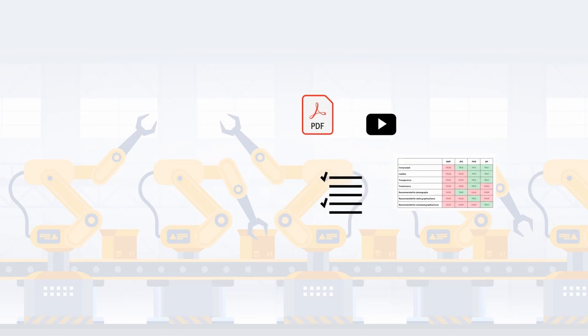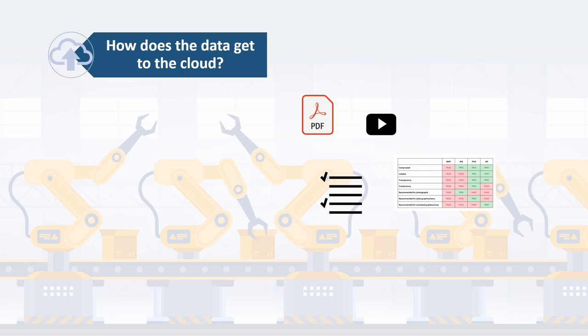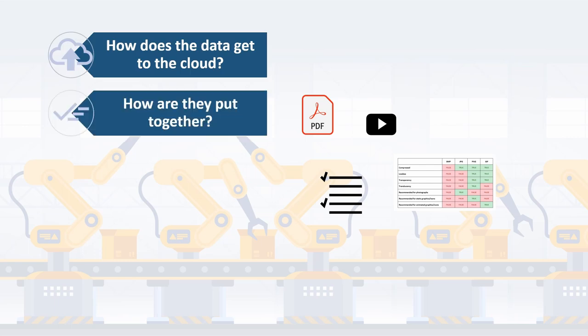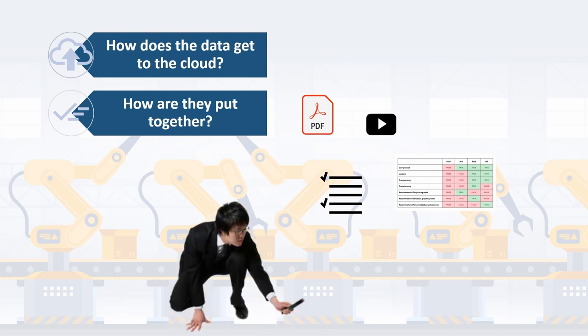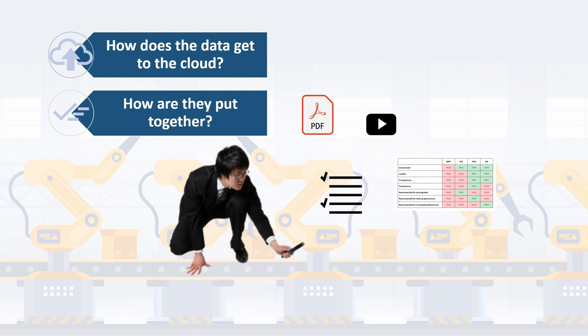But where does the information come from? How does it get into the cloud? And how is it collected? After all, it can't be the case that manufacturers have to painstakingly gather the data manually from various systems in order to make it available as a digital nameplate, can it?